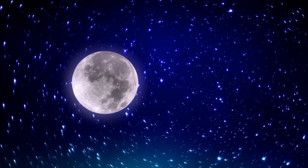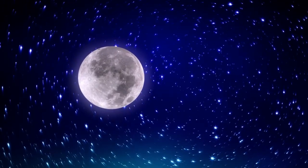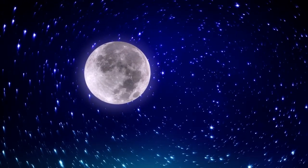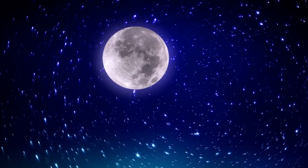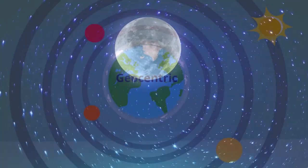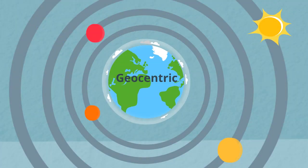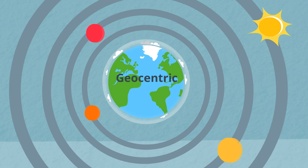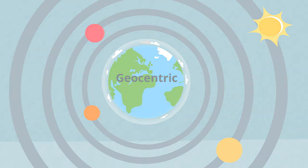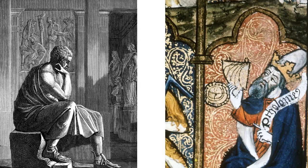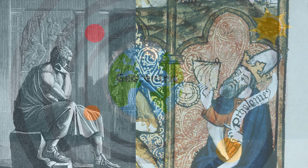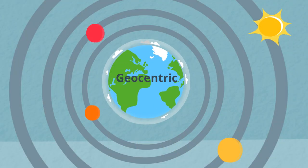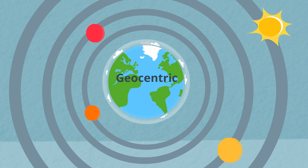From the perspective of the stars moving, it is very easy to assume that the Earth is at the center of the universe. This was the accepted theory called the geocentric model for many years. Great minds like Aristotle and Ptolemy proposed and supported this view of the universe. Geocentric means Earth-centered, and it just seemed right.